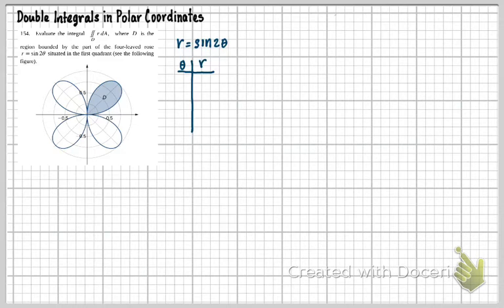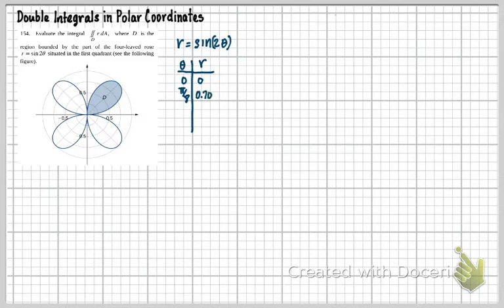Since this is two theta, whatever I plug in for theta gets multiplied by two, so I want to think of smaller values than usual. For theta equals zero, R equals zero. Then for theta equals pi eighths, I multiply by two to get pi fourths, and sine of pi fourths is approximately 0.707.